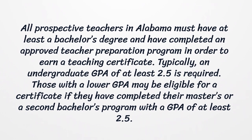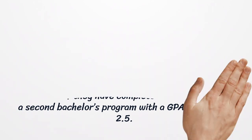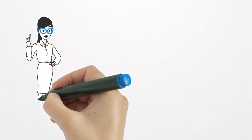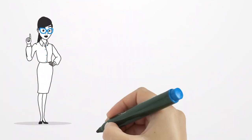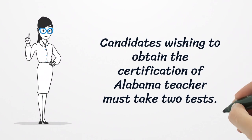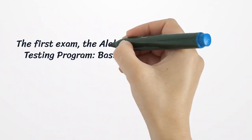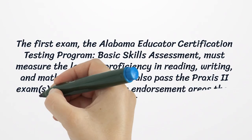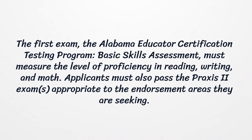Those with a lower GPA may be eligible for a certificate if they have completed their master's or a second bachelor's program with a GPA of at least 2.5. Candidates wishing to obtain certification must take two tests. The first exam, the Alabama Educator Certification Testing Program Basic Skills Assessment, must measure the level of proficiency in reading, writing, and math.